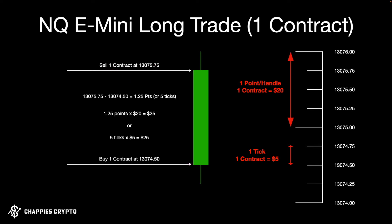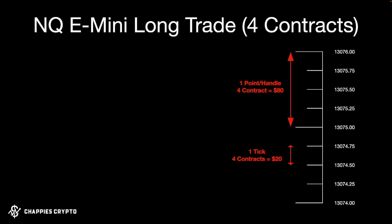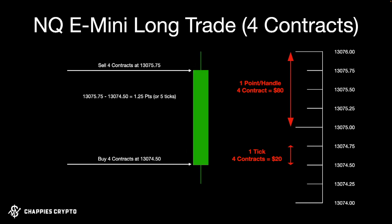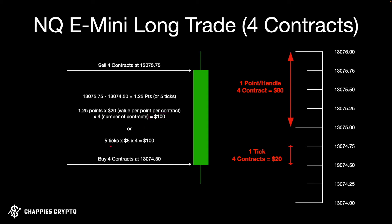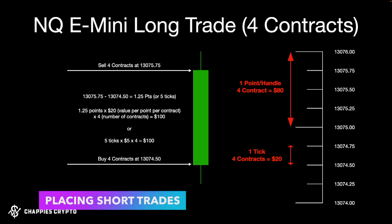What about multiple contracts? It's essentially the same concept — you just multiply by the number of contracts. Same price differential, same movement, but this time we buy and sell four contracts. The calculation is: point movement times contract value times number of contracts equals total profit. Or by ticks: five ticks times five dollars per tick times four contracts equals one hundred dollars. So four contracts on this move equals one hundred dollars profit.